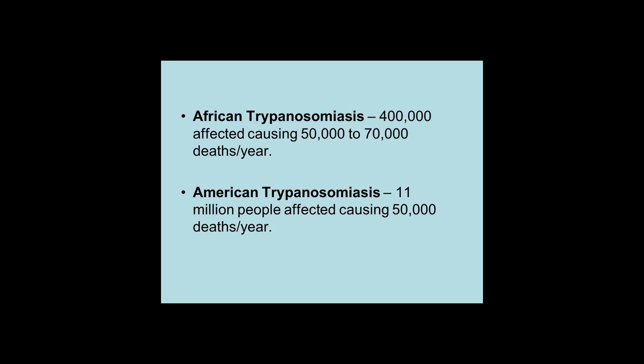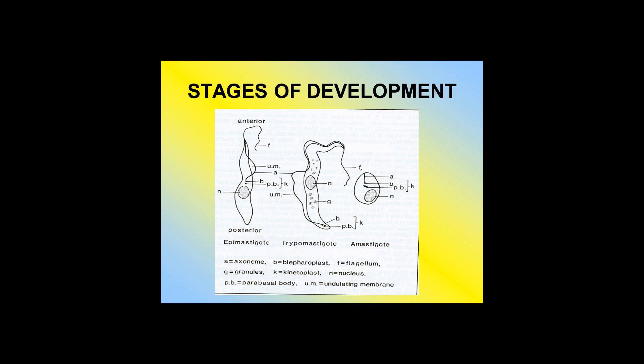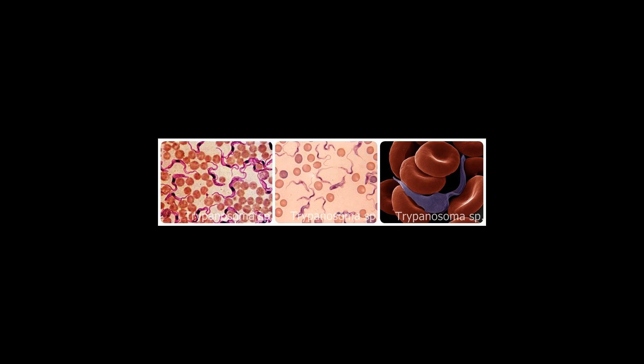Flagella. All kinetoplastids possess at least one flagellum. Species in the order Trypanosomatida have one and Bodonida have two. In kinetoplastids with two flagella most forms have a leading and trailing flagellum, the latter of which may or may not be attached to the side of the cell. The flagella are used for locomotion and attachment to surfaces.